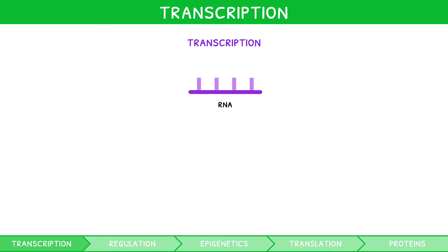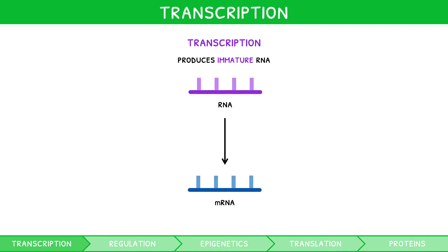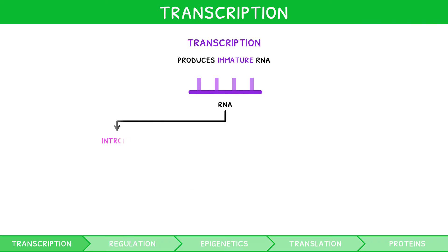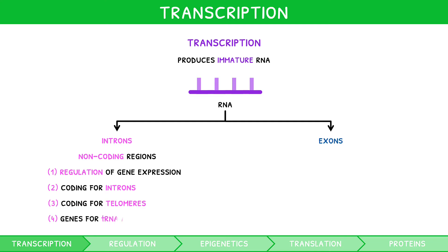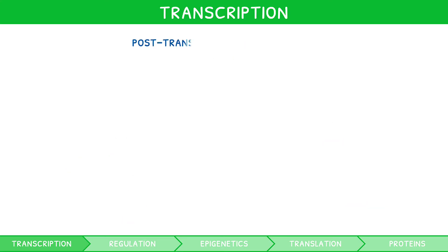For the IB Biology Higher Level Syllabus, you are expected to appreciate that transcription technically produces immature RNA, a precursor to protein-coding mature RNA known as mRNA. This is an important distinction, as immature RNA can come in two forms: introns and exons. Introns are the sections of RNA which do not code for protein, i.e. non-coding regions. Exons are the sections of RNA which do code for protein, i.e. coding regions. Only exons are utilised to form protein-coding mRNA, and this selection process is known as post-transcriptional modification.